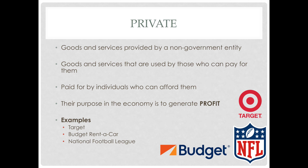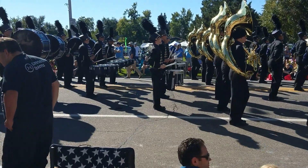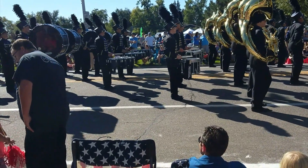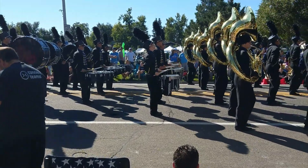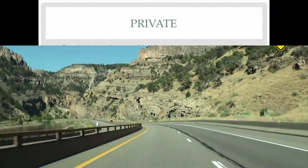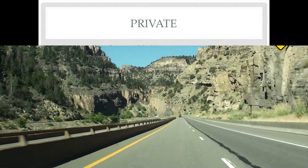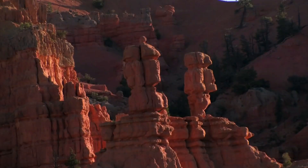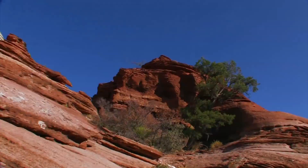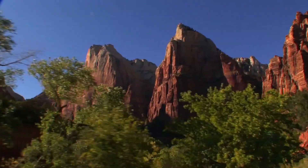Now contrast that with private goods and services. These are goods and services provided by a non-governmental entity — some sort of individually owned business. Since these goods and services are private, they can be used by those who can pay for them. If a student or family can't afford education, they still get to go to public school. If a family doesn't have a lot of money, they still get to drive on I-25, a free highway, or visit a public park. Something that is private is paid for by the individuals who can afford it.